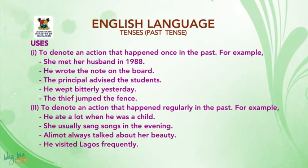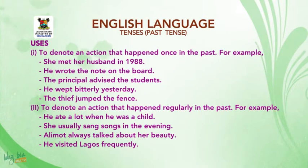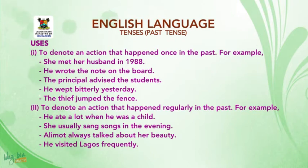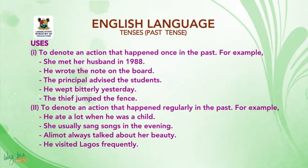Let's look at the uses of the Simple Past Tense. 1. It is used to denote an action that happened once in the past. For example: She met her husband in 1988. You wrote the note on the board. The Principal advised the student. You worked bitterly yesterday. The thief jumped the fence.